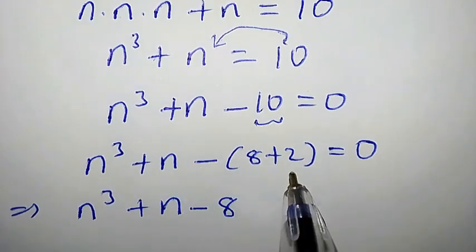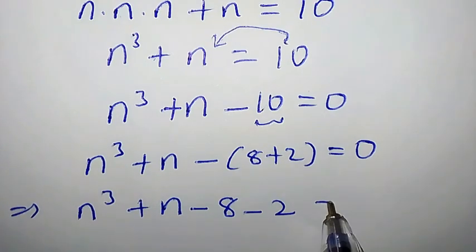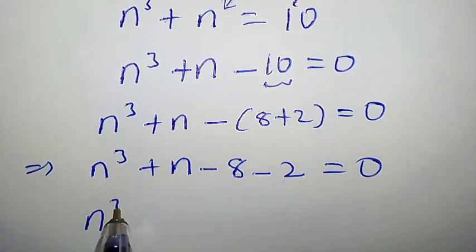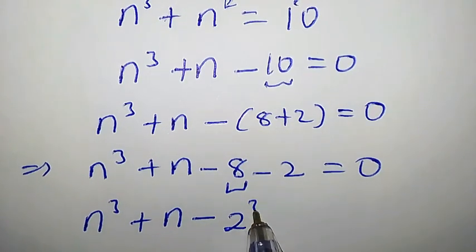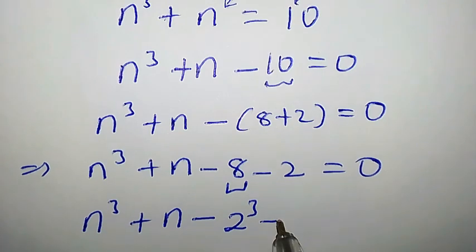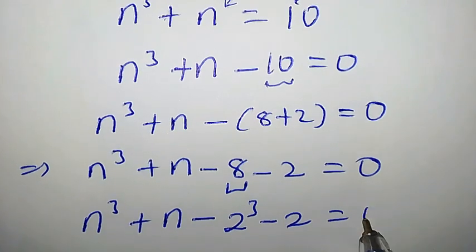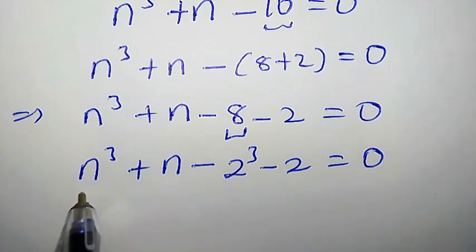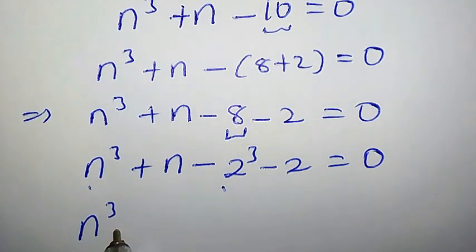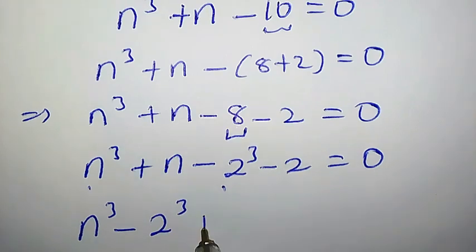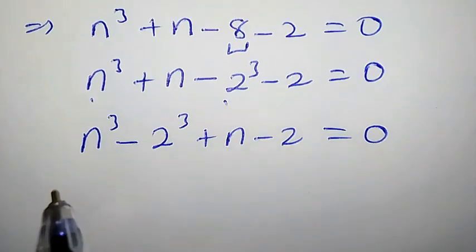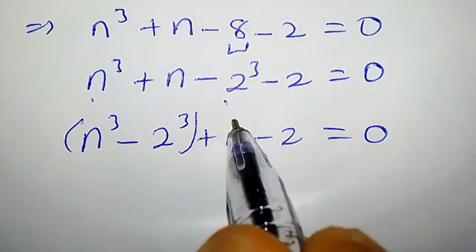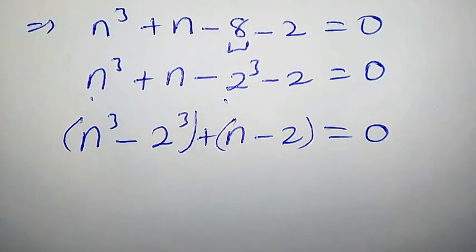So we have n³ plus n minus 8 minus 2 equal to 0. We can rewrite 8 as 2 to the power of 3, that is 2 times 2 times 2, minus 2 equal to 0. Now let us combine the common terms: n³ minus 2³, plus n minus 2 equal to 0. We can put these guys in brackets — nothing has changed.